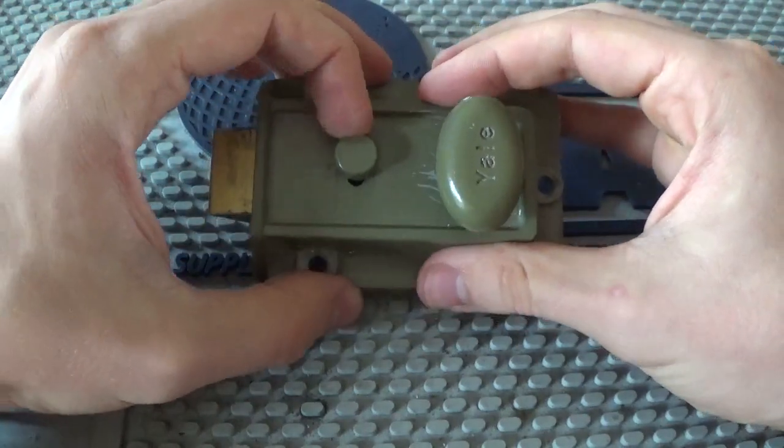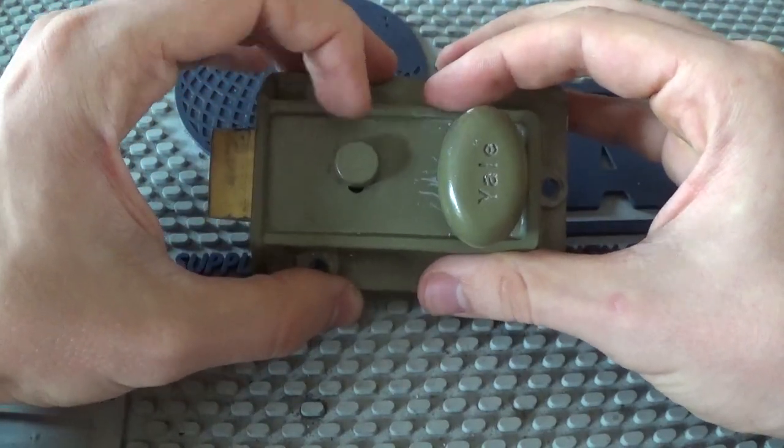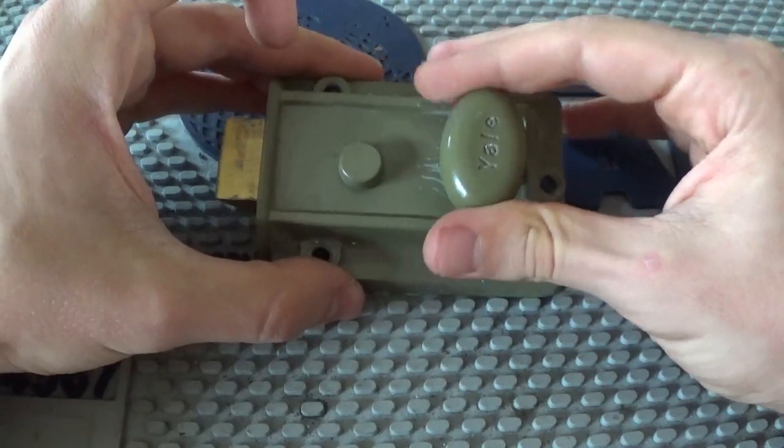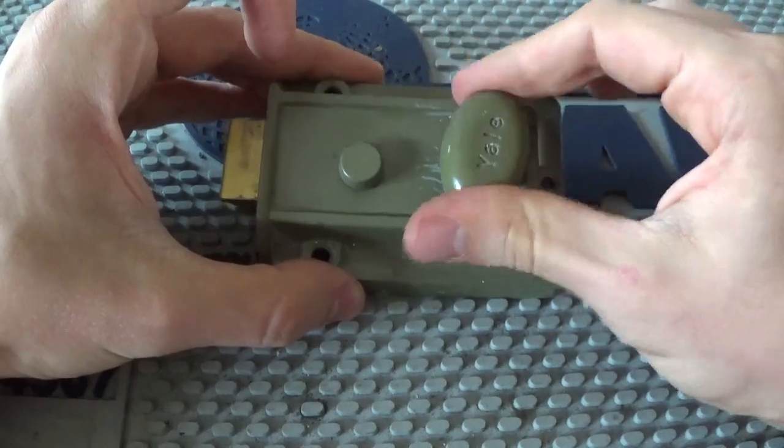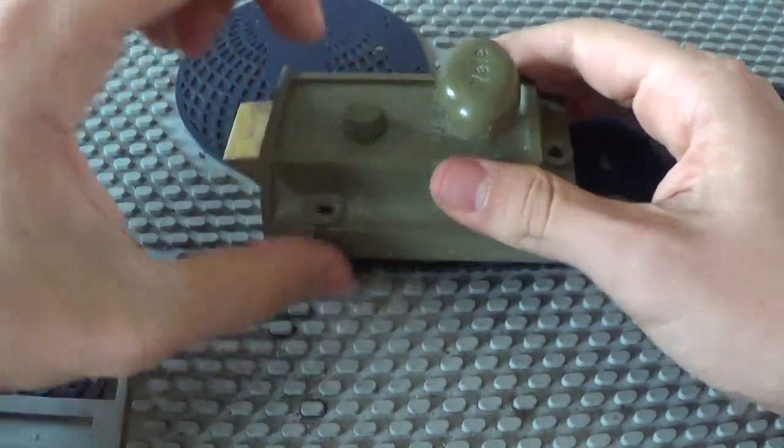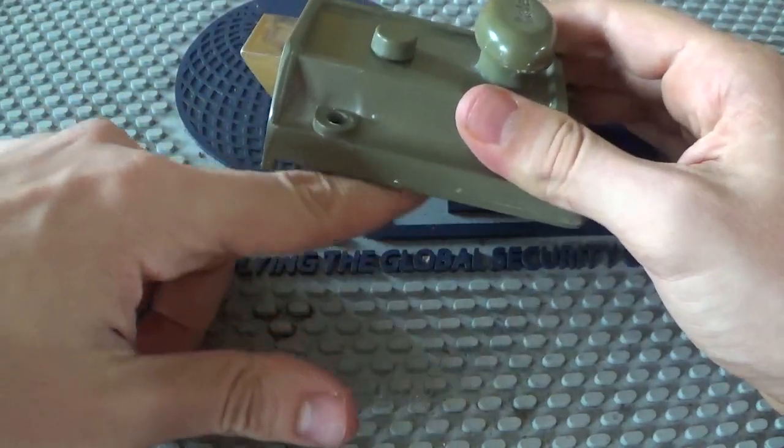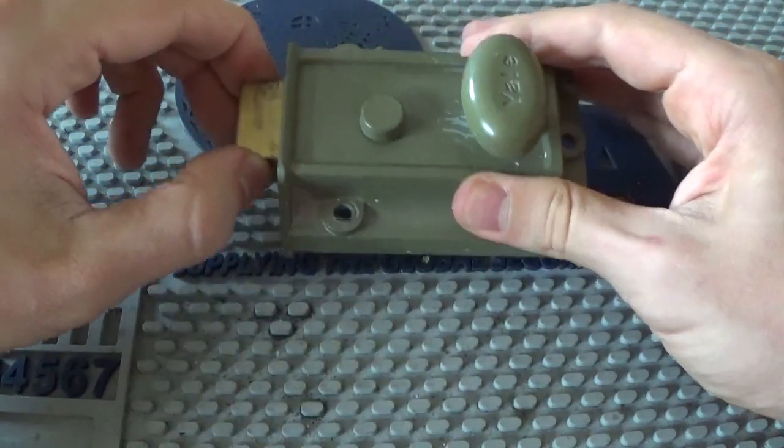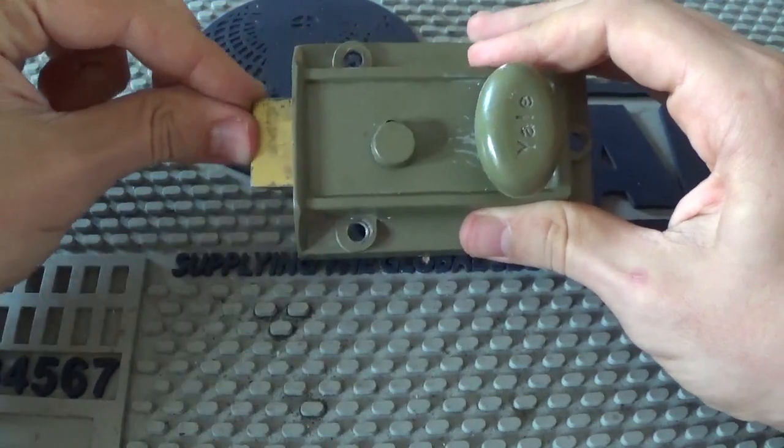It's called a night latch anyway because this here is a little switch. If you put it down you cannot turn the thumb turn anymore and also if you have your key in the other side of the door and you try and open the door from outside it doesn't retract the bolt.